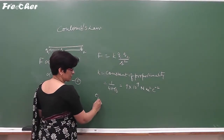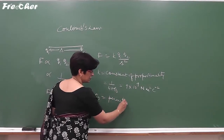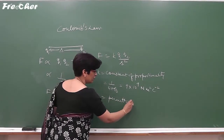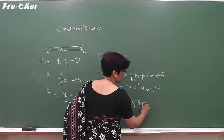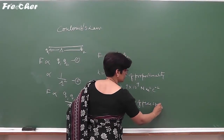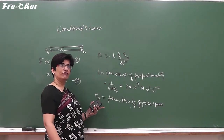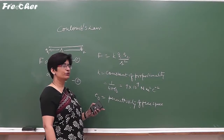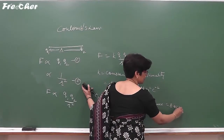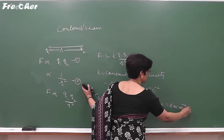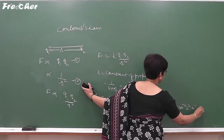What is ε₀? It is known as the permittivity of free space. It gives the effect of the medium when we are calculating the force between the two charges, and its value is 8.85×10⁻¹² coulomb squared per newton per meter squared.